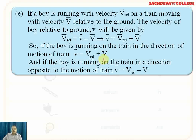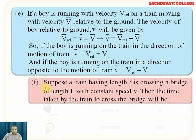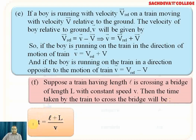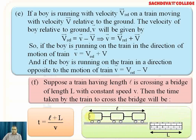Suppose a train having length l is crossing a bridge of length L. We consider the total length, that is capital L plus small l, with constant speed v. The time taken by the train to cross the bridge is t = (L + l) / v — total distance divided by speed. Here, small l is the length of the train and L is the length of the bridge, as indicated in the figure.